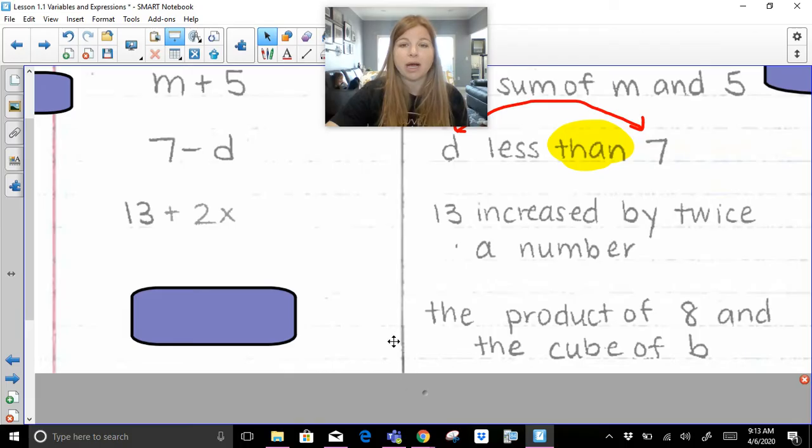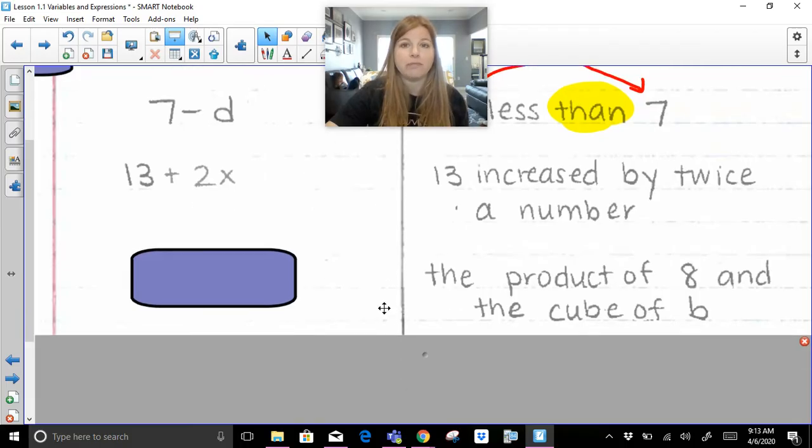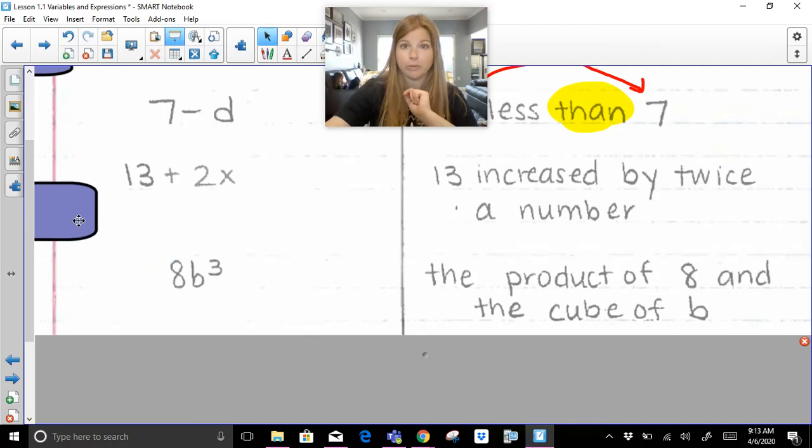What if I gave you the product of 8 and the cube of b? The product of 8 and the cube of b. Now, what operation does product mean? It means multiplication. So I have to multiply 8 and the cube of b. Now, cube is about powers. Squared is the second power. Cubed is the third power.